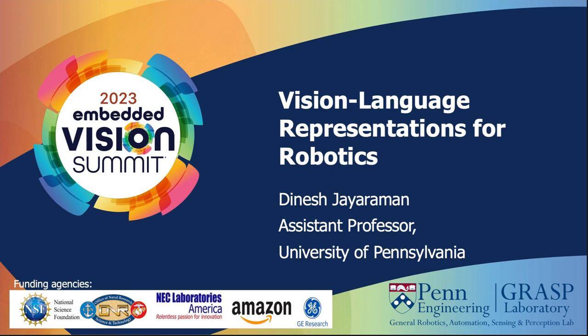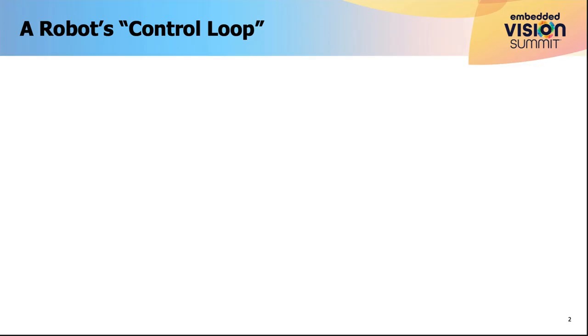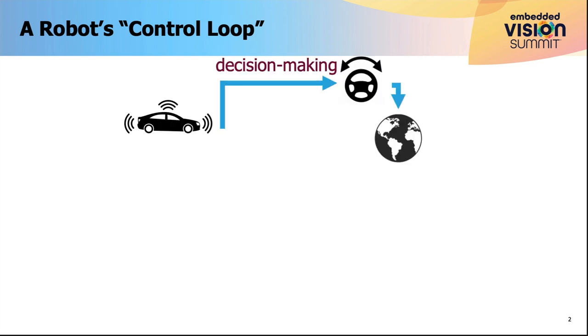And to motivate that, let me start by describing what typically happens in the control loop of a robot. You can think of a robot as being something like an autonomous car, which is constantly making decisions about how to act in the world.